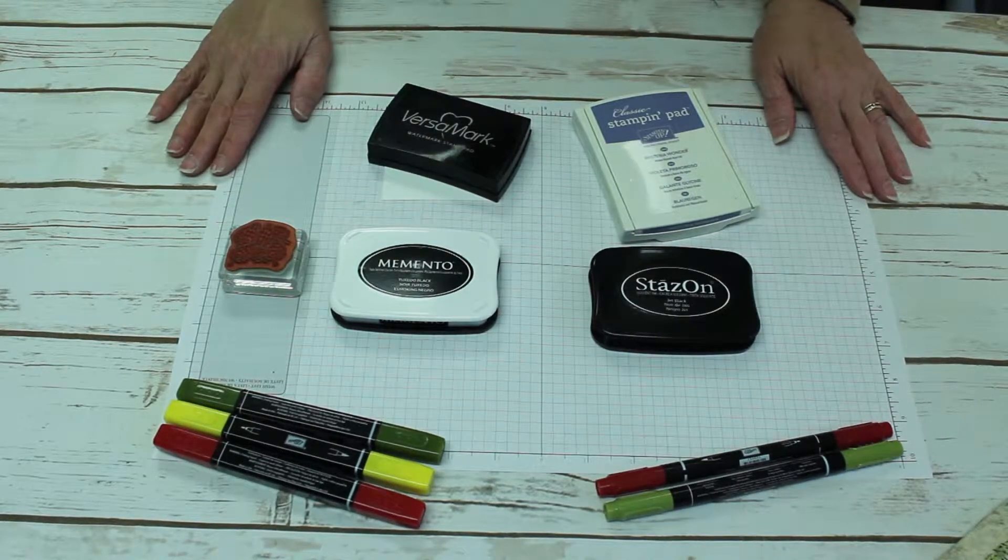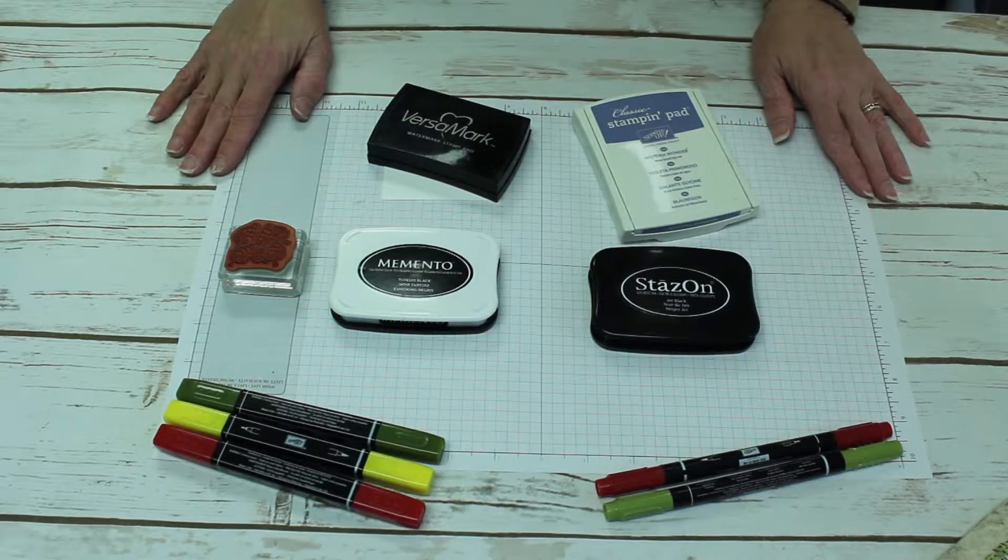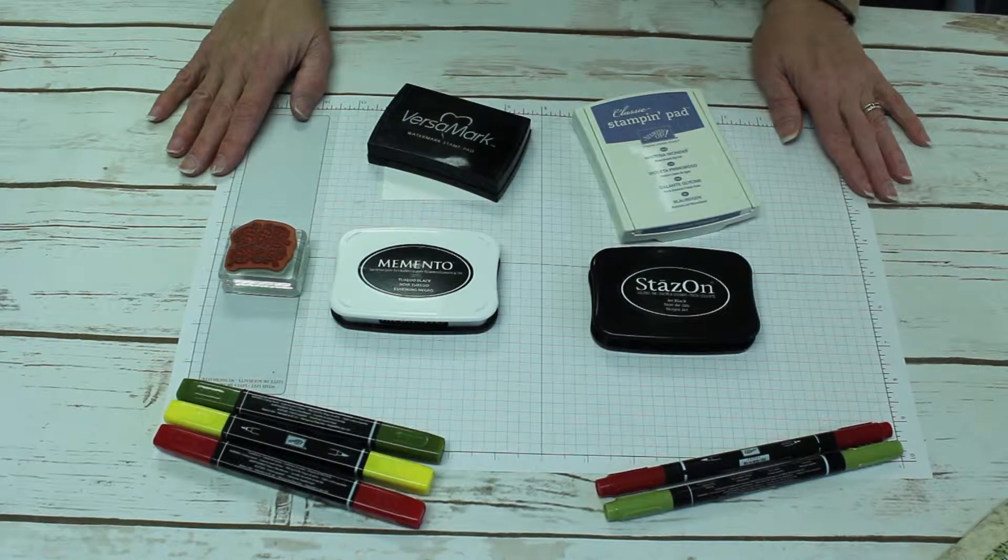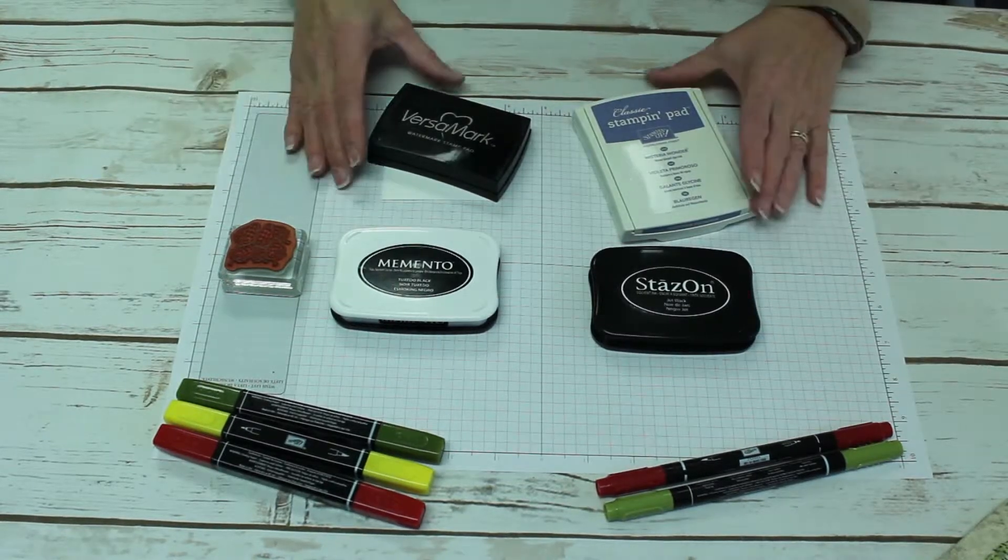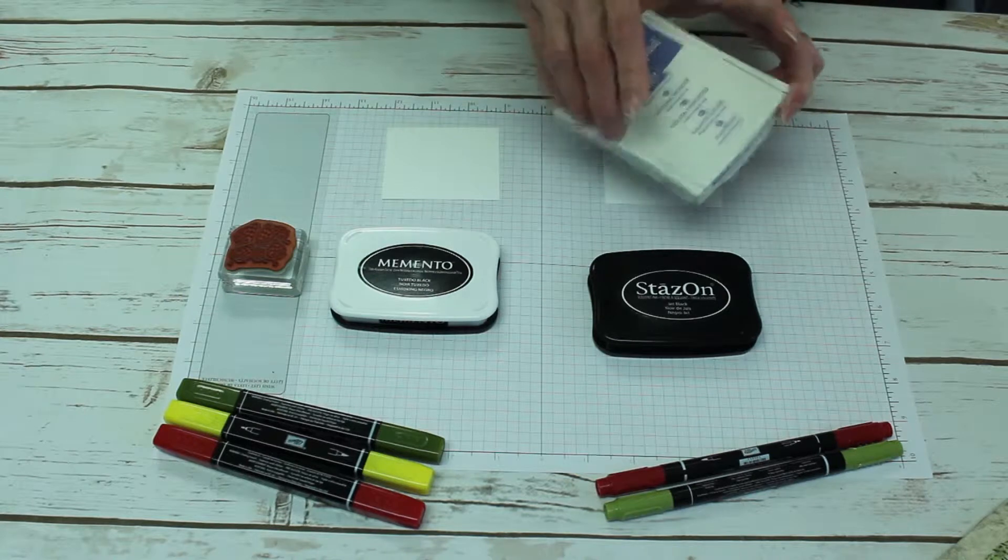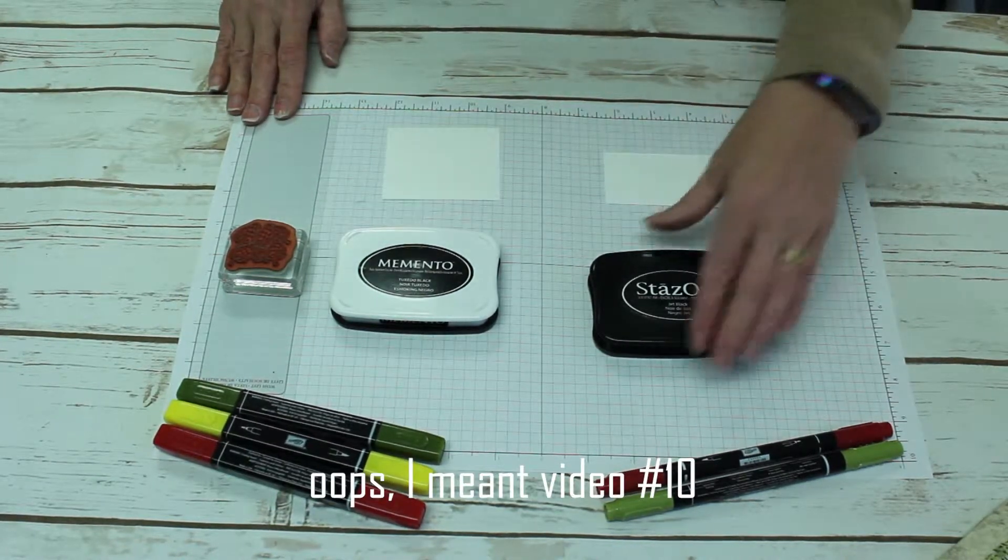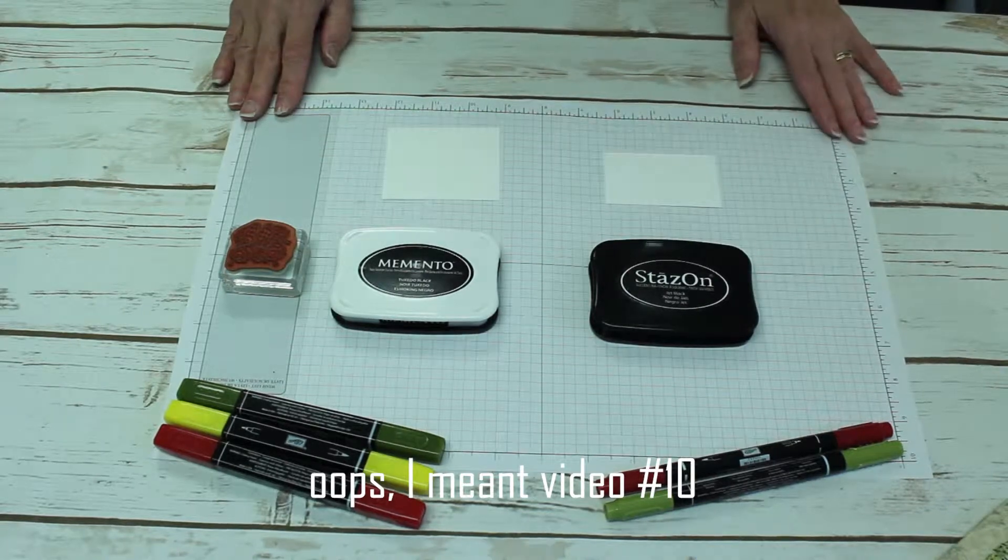Last week we talked about Versamark watermark stamp ink and Stampin' Up! classic water-based dye ink. If you'd like to know when to use these, just check out video number eleven. Today we're going to talk about when you would need Memento or StazOn ink.